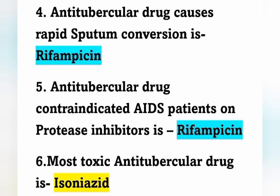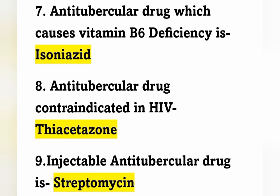Anti-tubercular drug contraindicated in AIDS patients on protease inhibitors is Rifampicin. The most toxic anti-tubercular drug is Isoniazid.